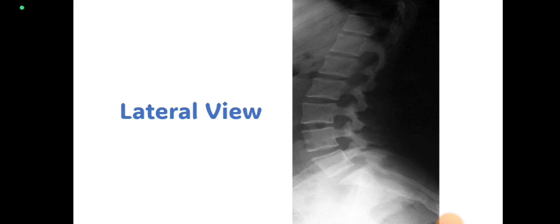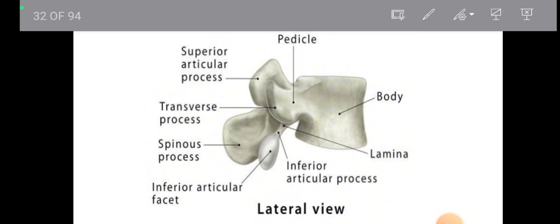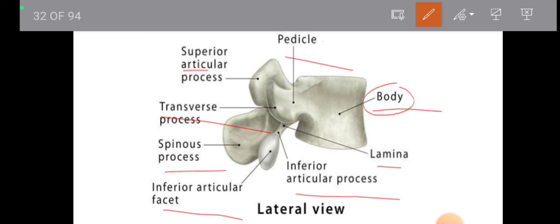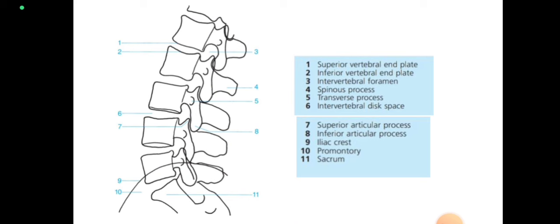Now let's talk about the lateral view, which is a very common view. We are projecting the x-rays from the lateral side of the human body. In the lateral view anatomy, we have to look for the pedicle, body, lamina, inferior articular process, inferior articular facet, superior articular process, transverse process, and spinous process. The body, pedicle, lamina, and spinous process are all clearly visible in the lateral view.